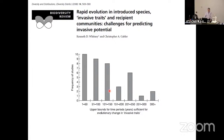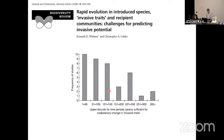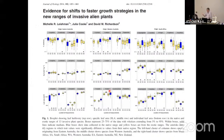When introduced into the non-native range, plants actually shift their trade-offs. The most well-known explanation is that you escape from herbivores or other pathogens that are only present in the native range. Not having those pathogens or herbivores releases a lot of resources previously allocated to chemical defenses or spines, which can instead increase photosynthetic systems, growth, and competitive ability, giving an advantage in the non-native range where there are no specialist natural enemies.